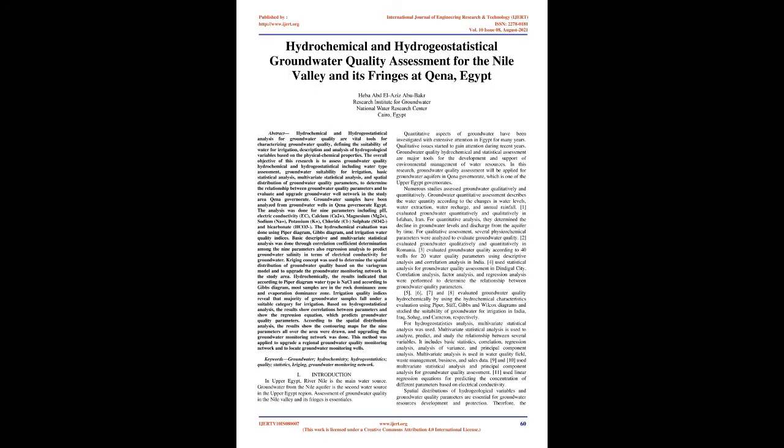Hydrochemical and hydrogeostatistical analysis for groundwater quality are vital tools for characterizing groundwater quality, defining the suitability of water for irrigation, and analysis of hydrogeological variables based on physical chemical properties. The overall objective of this research is to assess groundwater quality hydrochemical and hydrogeostatistical analysis, including water type assessment, groundwater suitability for irrigation, basic statistical analysis, multivariate statistical analysis, and spatial distribution of groundwater quality parameters, to determine the relationship between groundwater quality parameters and to evaluate and upgrade the groundwater well network in the study area, Kena Governorate.